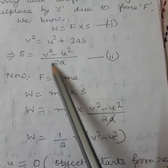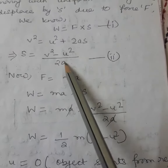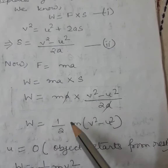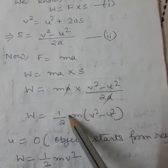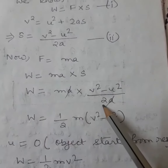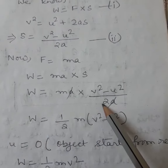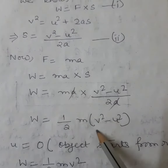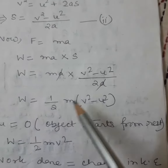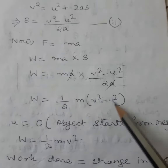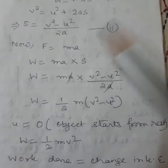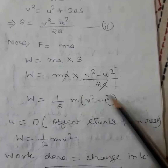Now what is the value of s? It is v square minus u square, all divided by 2a. Simply put the value of s here. Now see — a in the numerator and a in the denominator cancel. So what remains is W is equal to half m into (v square minus u square), since the 2 in the denominator becomes half. Removing the bracket we get half m v square minus half m u square — that is final kinetic energy minus initial kinetic energy.